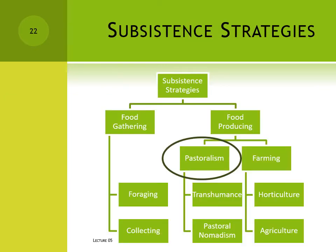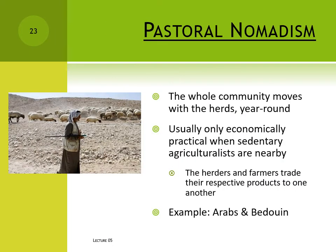The alternative to transhumance is pastoral nomadism, where the whole community moves with the herds more or less year-round. In such settings the pastoralists can't farm their own vegetable foods, so they maintain close trading alliances with sedentary agricultural societies. The pastoralists exchange animal products – meat, cheese, furs – for vegetable foods. The agriculturalists get animal products without devoting their territory to livestock grazing, because their territory is probably more valuable as cropland.